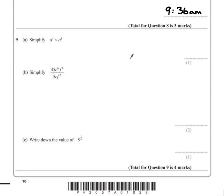Question 9 part a. Simplify a to the power of 4 times a to the power of 5. Because both of our base values are a, we can use a law of indices here to show what happens.